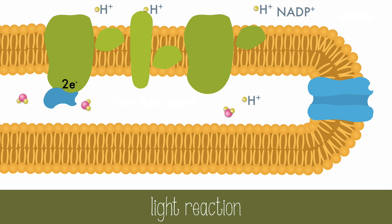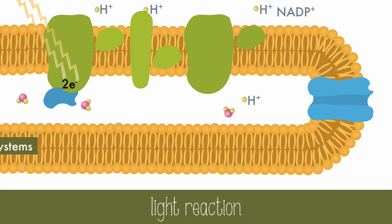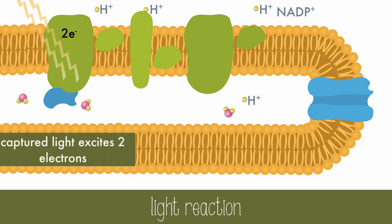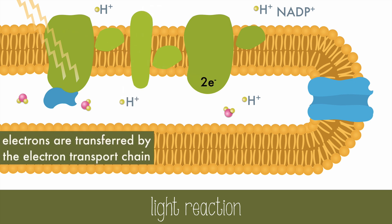Light strikes the photosystems, which are clusters of chlorophyll. The captured light excites two electrons, which are then transferred from one molecule to the next by the electron transport chain, which is just a series of proteins. This process also brings some hydrogen ions into the thylakoid space.